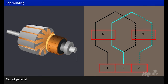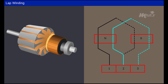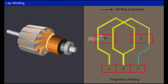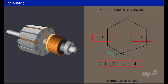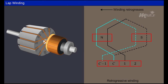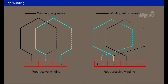The number of parallel paths A of lap winding is equal to the number of poles P. The illustrated armature winding is called progressive winding, as the winding progresses in the direction of the coil wound. The other way of winding is called retrogressive winding, in which the winding progresses in the direction opposite to that of the coil winding direction, as illustrated.